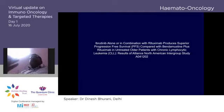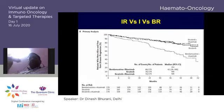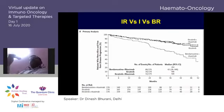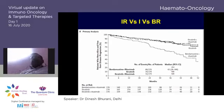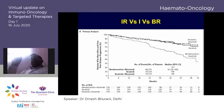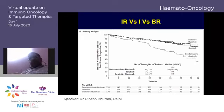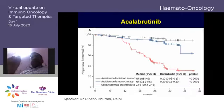A three-arm trial compared ibrutinib alone, ibrutinib plus rituximab, and rituximab plus bendamustine. Two messages: rituximab plus bendamustine is inferior; and if you are using ibrutinib, rituximab does not add a major role. This doesn't mean all anti-CD20 antibodies are ineffective, but rituximab specifically may not be needed with ibrutinib.